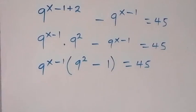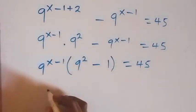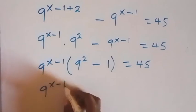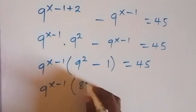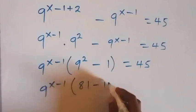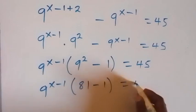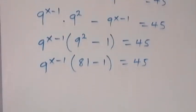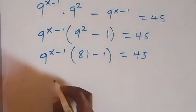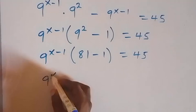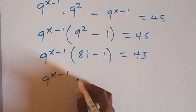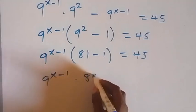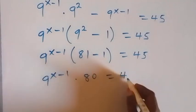Then from here, 9 squared, 9 times 9, that's 81. So we have 9 raised to power x minus 1 into bracket 81 minus 1 now, which is equal to 45. And 81 minus 1 here is 80. So we have 9 raised to power x minus 1 times 80 equals to 45.